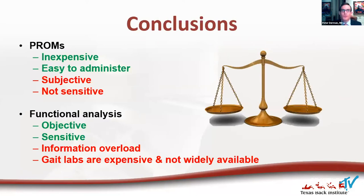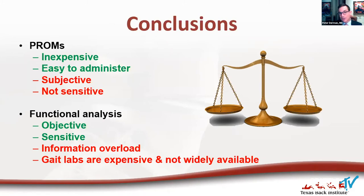In conclusion, I don't think there's one right thing — we should not only do PROMs or only functional analysis. Patient-reported outcome measures are less expensive and easy to administer, but they're subjective and not as sensitive as functional analyses. Functional analyses are quite objective and very sensitive, but the flip side is information overload — literally hundreds or thousands of data points generated per patient — requiring specialized expertise to generate clinically meaningful output. Gait labs are expensive and not necessarily widely available, though hopefully that will change.